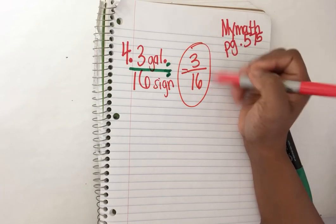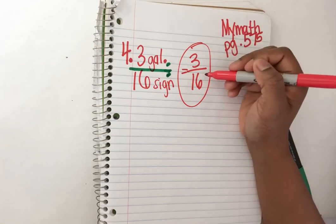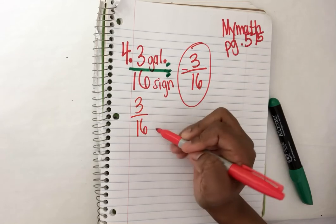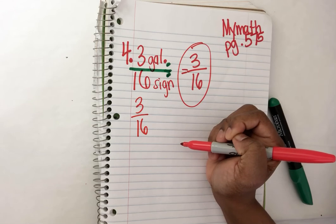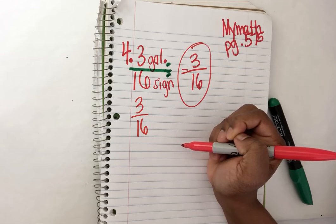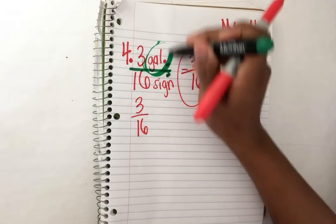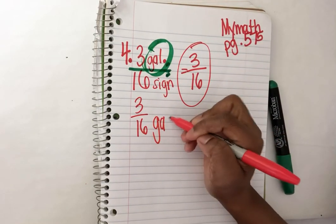Now what label should we put there? Let's go to the question to figure out three sixteenths what? What unit are we going to put? The question says how much paint did each sign use? And they reported the paint in gallons. So I'm going to put three sixteenths of a gallon.